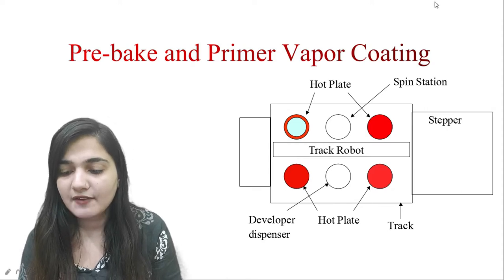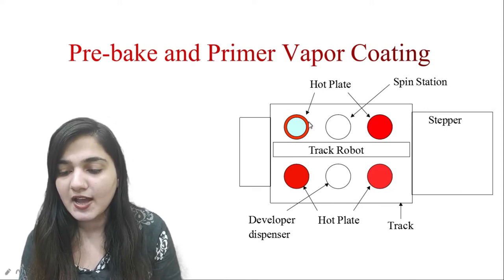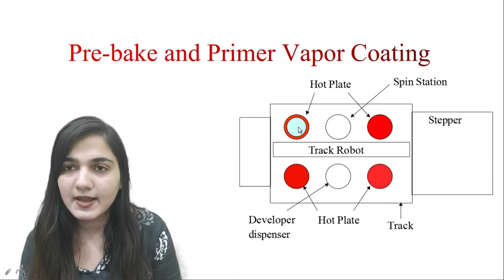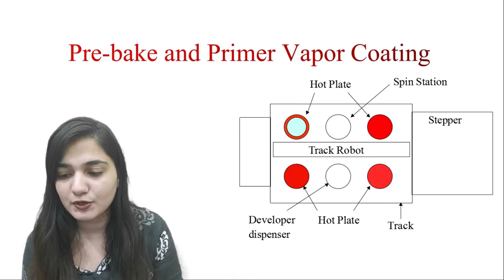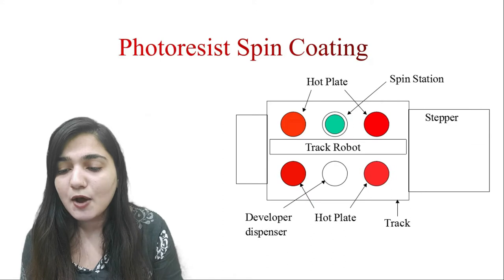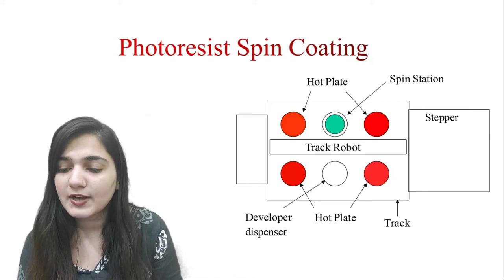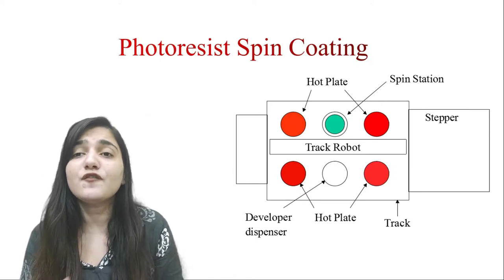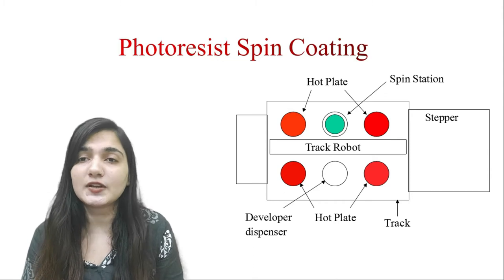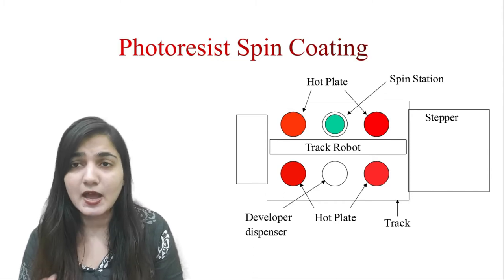Here we have the chill plate also. The wafer has moved inside for the pre-bake as well as for the primer vapor coating phase. Now after this, the track robot has moved the wafer to the spin station where the photoresist coating will be taking place.